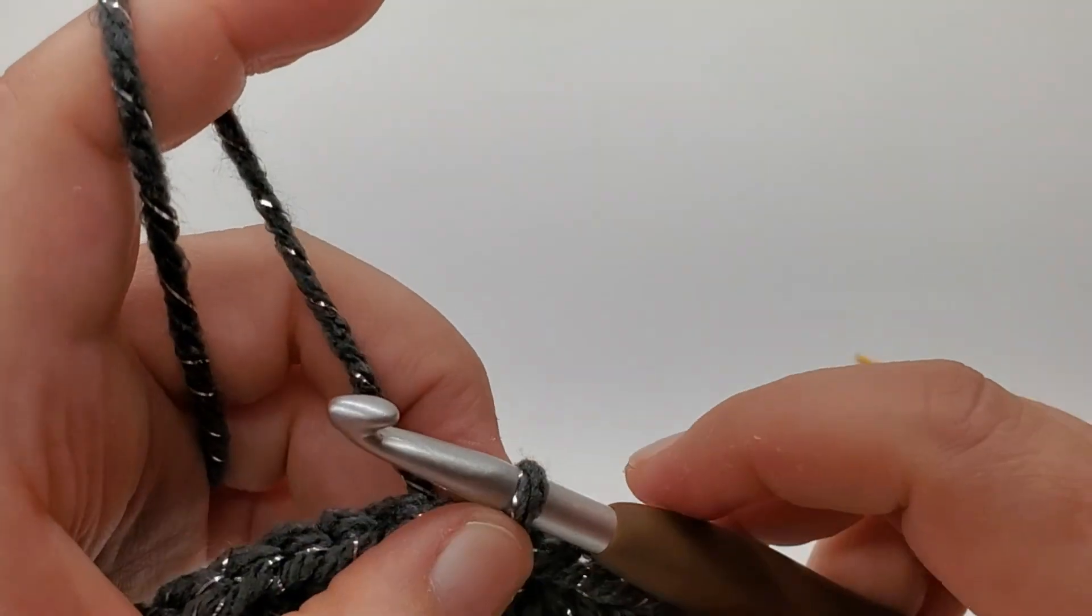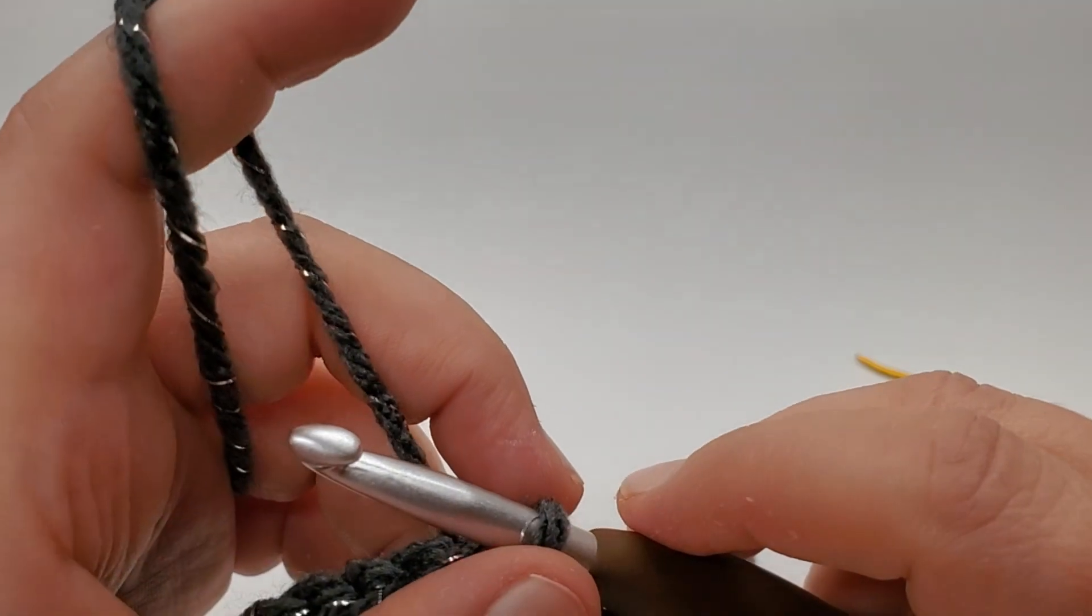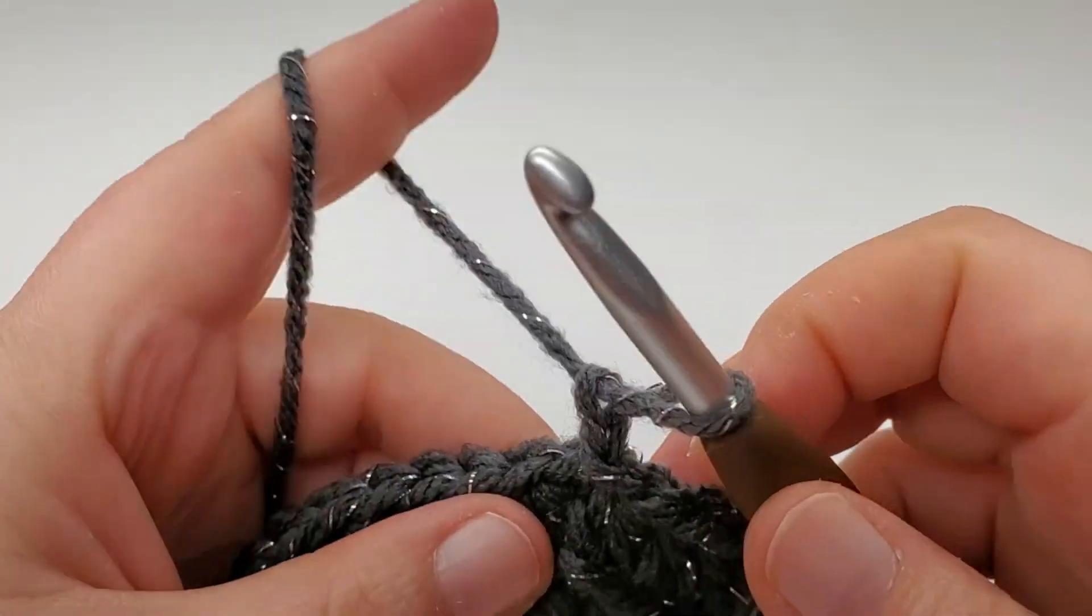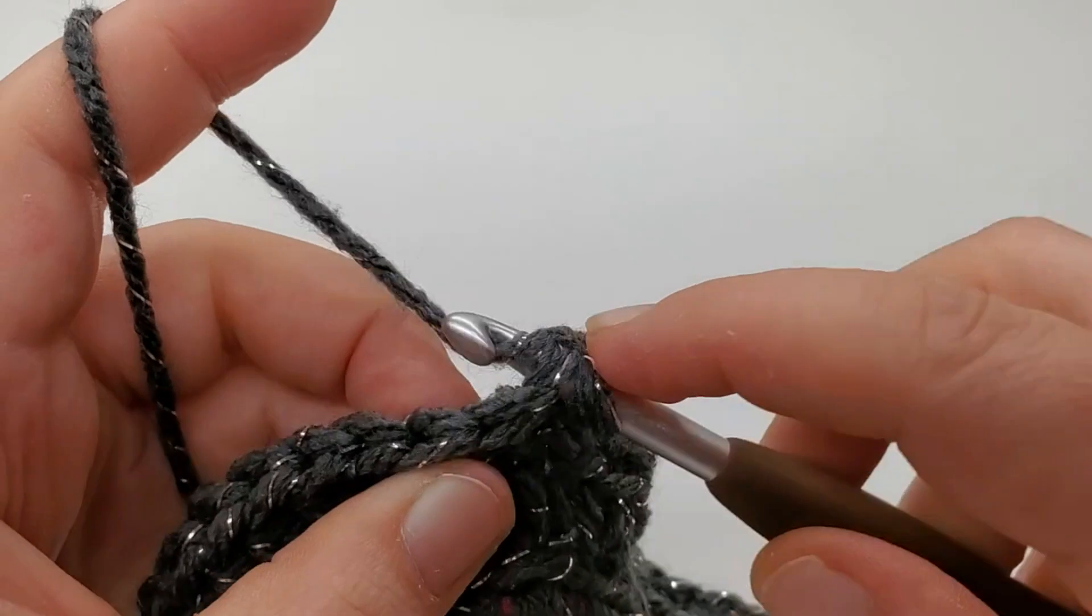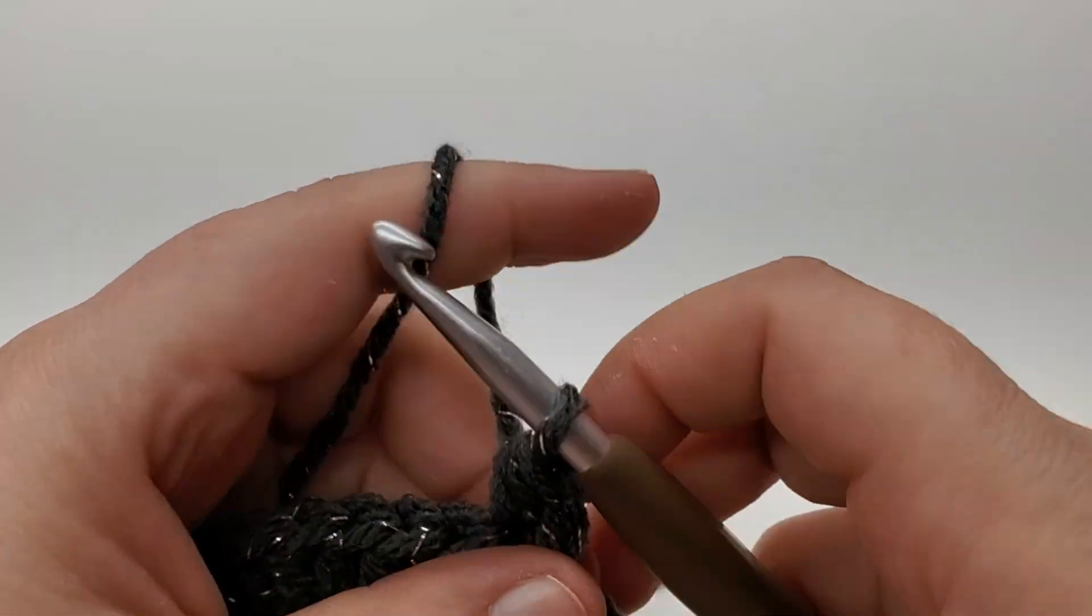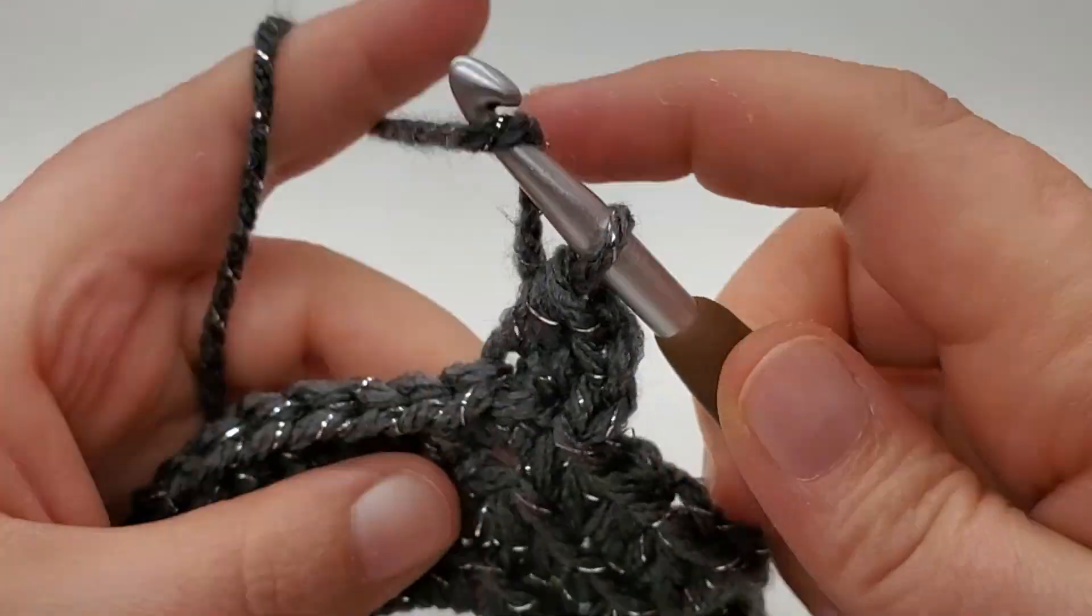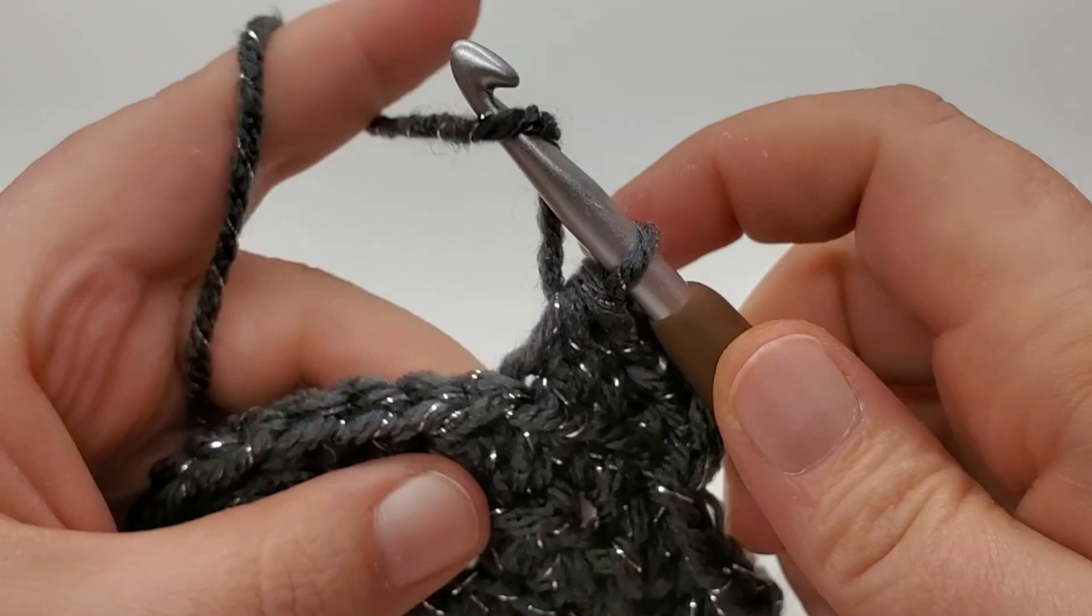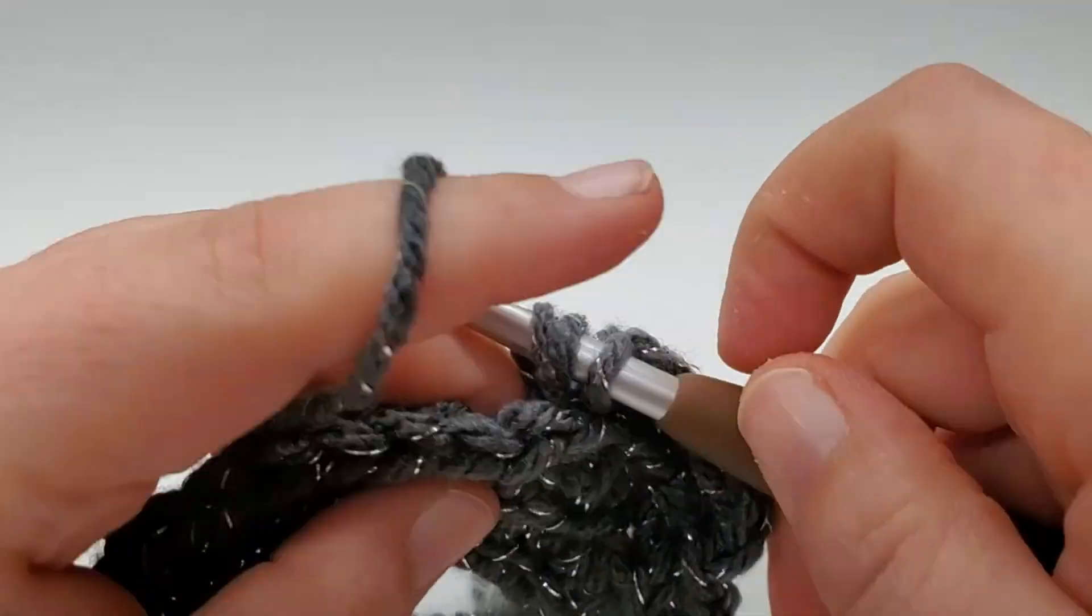Alright. For round four. We're going to chain one. Go ahead and work our back loop like normal. Yarn over. Go through all. And we're just going to work one in every stitch all around. Keeping our same stitch count. I forgot to work over my tail. Don't forget to go through that little back loop.